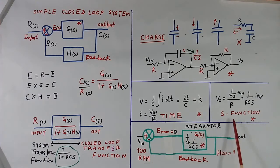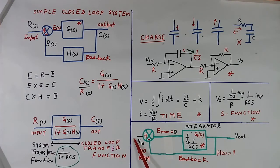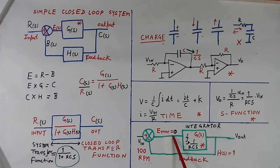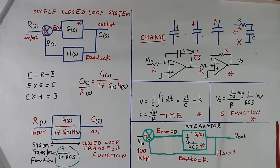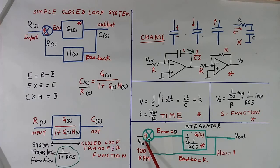So this is a closed loop control system. Anything happens — system voltage increases, system voltage decreases, value of C changes — for whatever reason, if this output point is changing from 100 to 110 or 100 to 90, this feedback will come, error will come, and depending on the change, error will be positive or negative and output will settle. That is the advantage of closed loop system. It does not depend on any external factor. Even if the value of RC is changing, whatever happens — this input and this feedback have to be equal. Only the reference needs to be accurate.